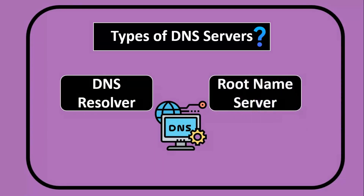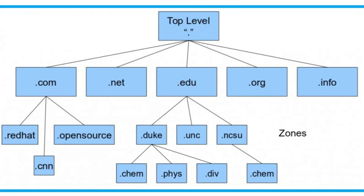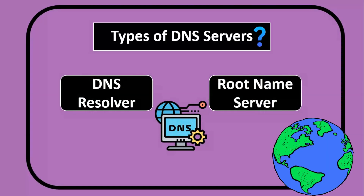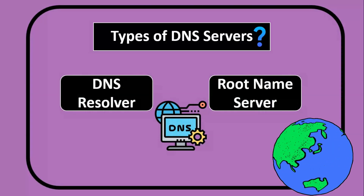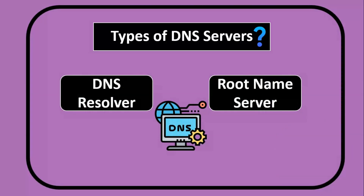The second type is the Root Name Server. There are 13 sets of root name servers distributed worldwide. The root name server represents the top level of the DNS hierarchy and helps redirect DNS queries to the appropriate TLD server based on the domain extension.